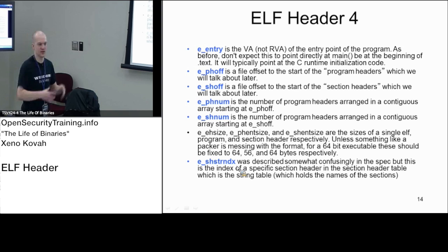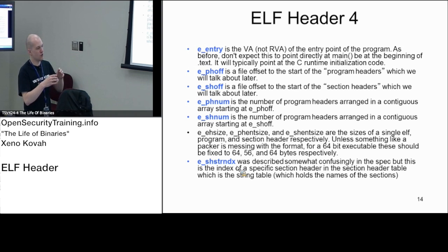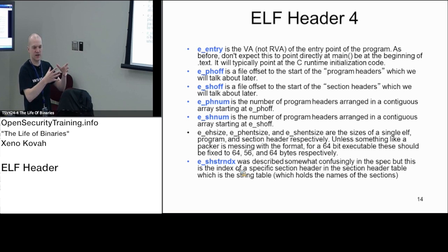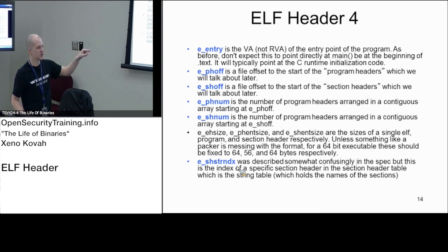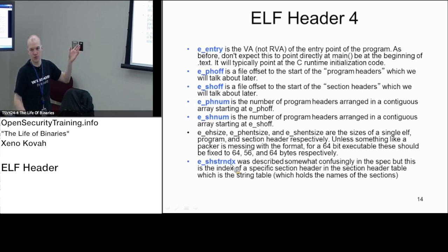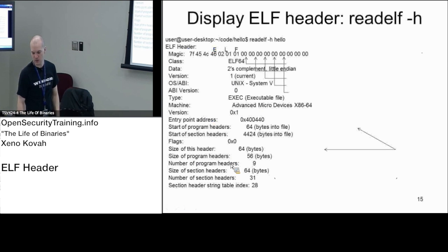Finally, the last field is the section header string index, e_shstrndx. There's one particular section header that holds a bunch of strings — the string table — and we need to know which index into the section header array points to it. Other sections reference their names as an offset into this string table. So you start at e_shoff to find where section headers begin, know there are e_shnum of them, and then e_shstrndx tells you — for example, at index two — that's the string table.